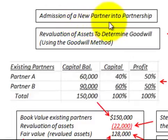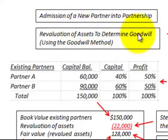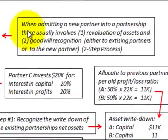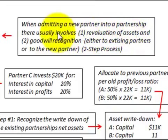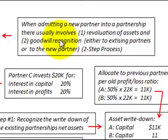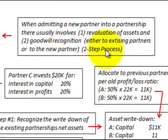Here we're going to be looking at admission of a new partner into a partnership. We're going to be looking at revaluation of assets to determine if there's any goodwill, and we're going to be using the goodwill method. When admitting a new partner into a partnership, there usually involves number one, revaluation of assets, and number two, goodwill recognition. Either the existing partners or the new partner would receive the goodwill, depending on the value of the partnership and how much the new partner had paid. It is a two-step process.